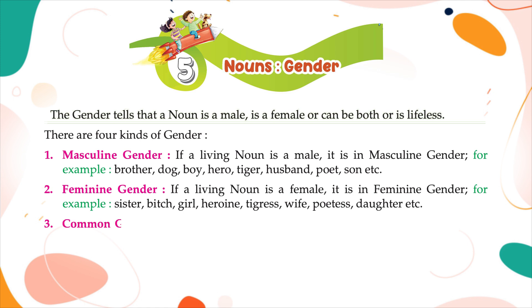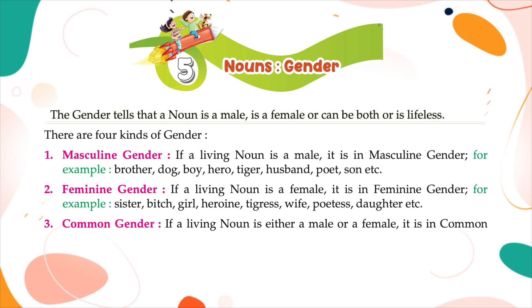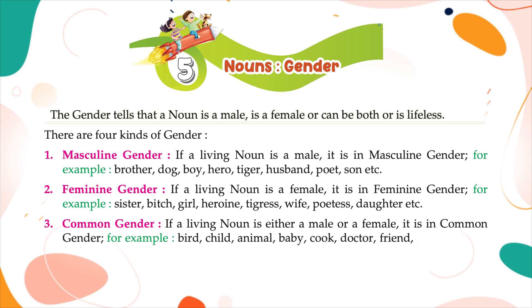Common Gender: If a living noun can be either a male or a female, it is in common gender. For example: bird, child, animal, baby, cook, doctor, friend, guest, enemy, fool, etc.